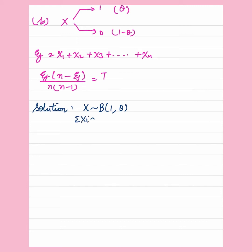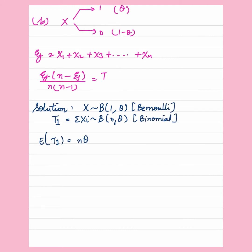Now, if X belongs to Bernoulli(1, theta), then summation of Xi belongs to Binomial(n, theta). Here, if I take summation Xi equals to Y, then the expected value of Y equals n·theta and the variance of Y equals n·theta times (1 minus theta).